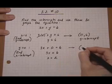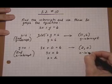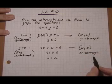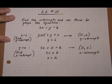So that means x is 2, y is 0 is the x-intercept. That's where our line will be intercepting or crossing the x-axis. So let's go ahead and get a graph of that.